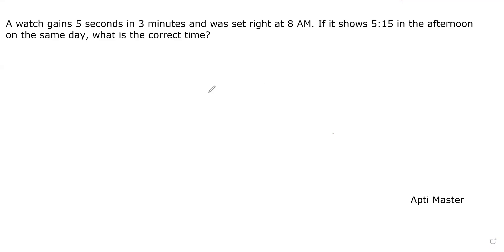Welcome to Apti Master. This is a new problem related to the clock. The question is: a watch gains five seconds in three minutes and was set right at 8 AM. If it shows 5:15 in the afternoon on the same day, meaning 5:15 PM, then what is the correct time?